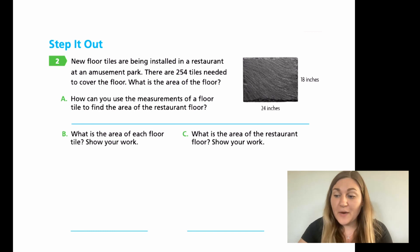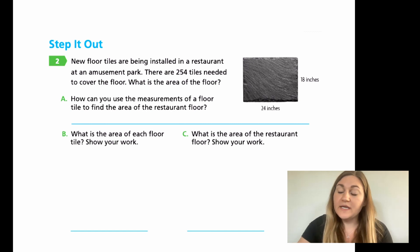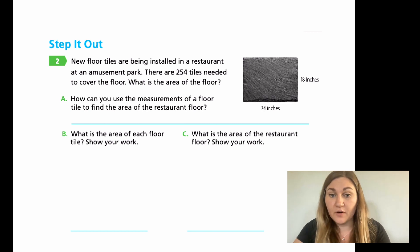Hopefully you had enough time to solve this problem. I'm going to go through A, B, and C now. So A, how can you use the measurements of a floor tile to find the area of a restaurant? So we know that if we find the measurement of one tile and then multiply it by 254, we'll be able to find the entire floor. So I want you to say that in your own words. B is what is the area of each floor tile? This is where we're going to take our length times our width, our 18 times our 24, and multiply them together.